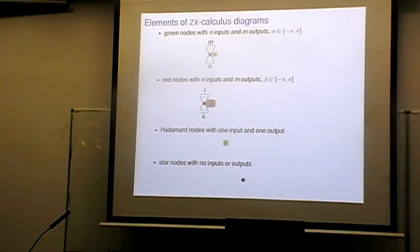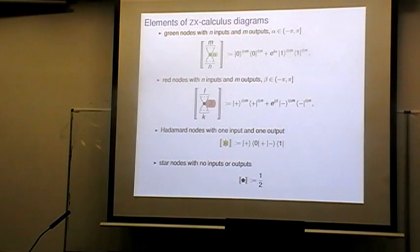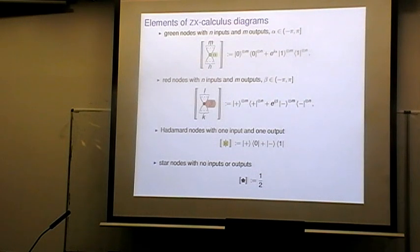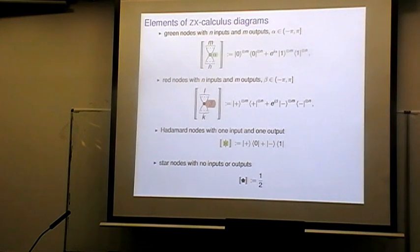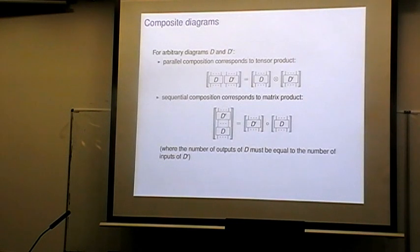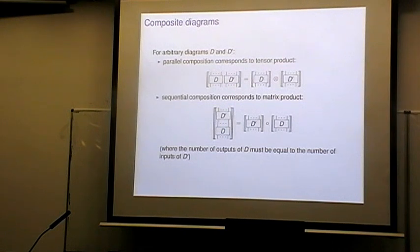I'm using double square brackets to denote the map that goes from diagrams to matrices. The green spiders are in the computational basis and my spiders are always phased — they have labels alpha attached, which give you a relative phase between the zeros and ones. For the plus-minus basis, similarly. The Hadamard nodes are as expected, and the star nodes have the value one-half. We can compose these things in the way we always do in process theory: putting two diagrams side by side corresponds to taking the tensor product of the corresponding matrices, and linking up inputs and outputs corresponds to taking the normal matrix product.